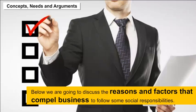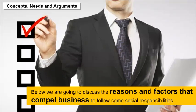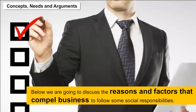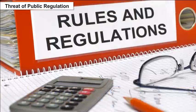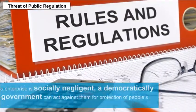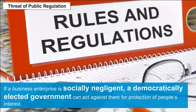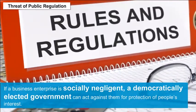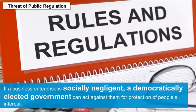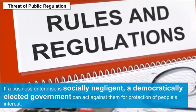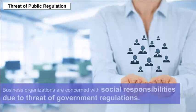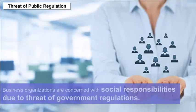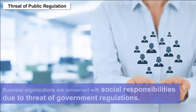Below we discuss the reasons and factors that compel business to follow social responsibilities. Threat of Public Regulation: If a business enterprise is socially negligent, a democratically elected government can act against them for protection of people's interest. So business organizations are concerned with social responsibilities due to the threat of government regulations.